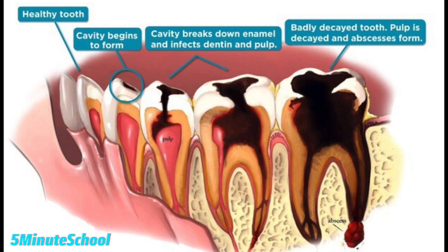To summarize the stages of tooth decay: first, the enamel demineralizes in patches; then a cavity develops into the enamel and sensitivity may begin — a filling can resolve this. The cavity progresses into the dentin, where a filling can again help. From there bacteria may reach the pulp chamber, causing severe pain — treatment is a root canal or extraction. Finally, bacteria infiltrates the entire pulp and root canal system, migrating outside the root tips and causing infection within the bone, forming an abscess — treated again by root canal or tooth removal.